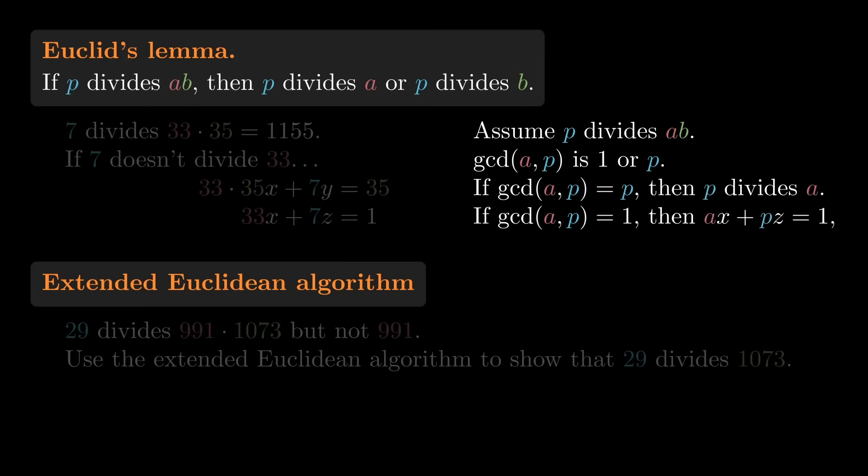If it's 1, then the extended Euclidean algorithm guarantees the existence of integers X and Z, such that AX plus PZ equals 1. Multiply by B, and we have B written as a sum of two multiples of P. Then we've got it. P divides B, so we're done.